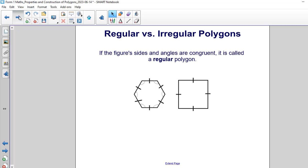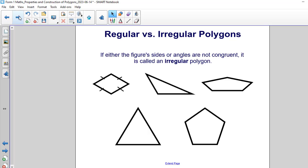Another way to classify polygons is by the term irregular. If either the figure sides or angles are not congruent it is called an irregular polygon. And here we notice that this triangle has different angles and different side lengths. So it is an irregular polygon.